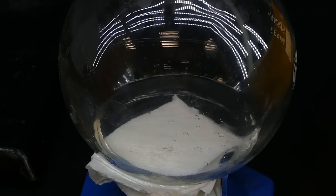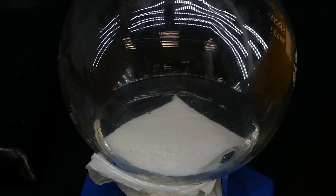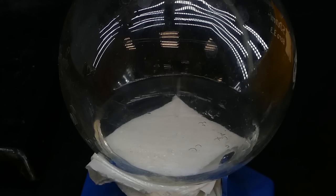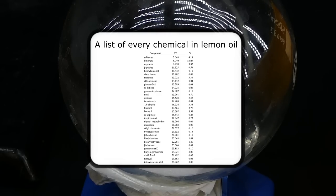Lemon oil is mainly made out of a chemical called limonene, which gives it most of its smell and properties. Limonene itself is pretty often used as a lab solvent, but also as a food additive and of course in perfumes. However, lemon essential oil is not just limonene because it also consists of many other smell compounds, but they are present in very small amounts, so in this video I will mainly just focus on the limonene.